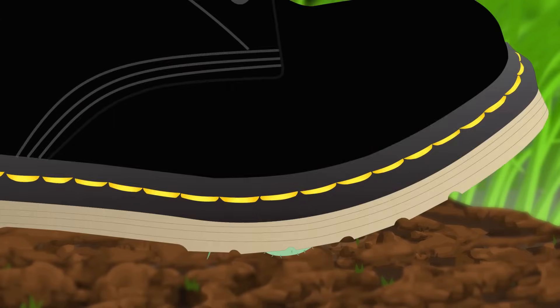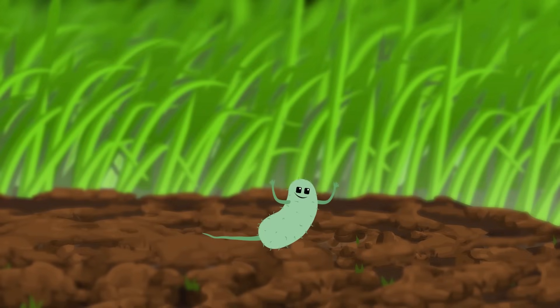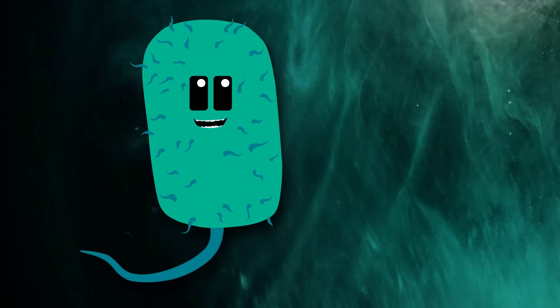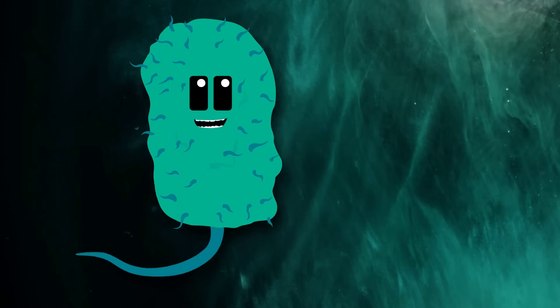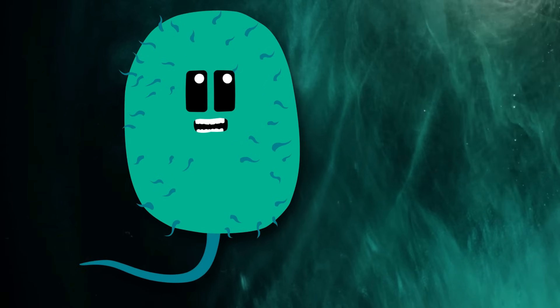Bacteria have cell walls made up of polysaccharides that give them strength and rigidity. This is important since bacteria often experience variations in osmotic pressure due to the different solutions they encounter, and it is their cell walls which prevent them from shrinking or swelling.